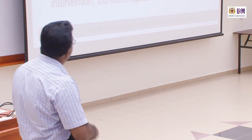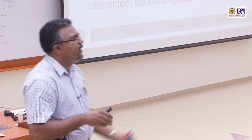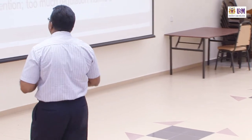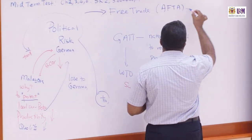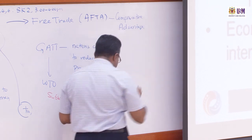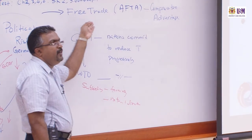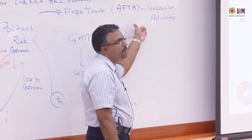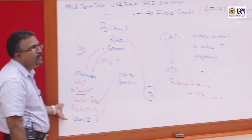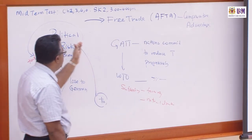Now we come to economic freedom. We want to ensure countries move towards free trade, so that activities such as import and export are purely based on comparative advantage. What we want to achieve through economic freedom is free trade at the end. Trade should be based on comparative advantage — not based on government intervention, which can create political risk. We don't want what happened in the automobile and steel industries to happen again. We want to achieve economic freedom where import and export are purely based on comparative advantage, not through government intervention.